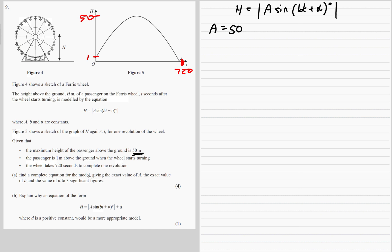The third bit of information: the wheel takes 720 seconds to complete a revolution. So this part of the sine graph is usually 180 degrees. It's going to go, because it's the mod, it's going to be this sort of shape. So this is 180 degrees but 720 seconds, so it's been stretched out.